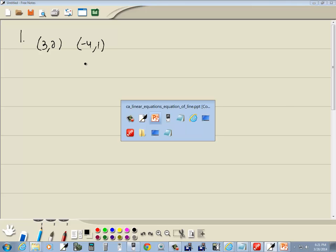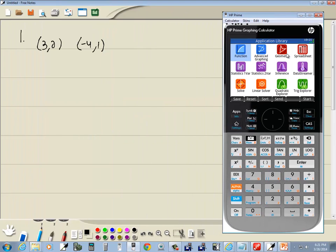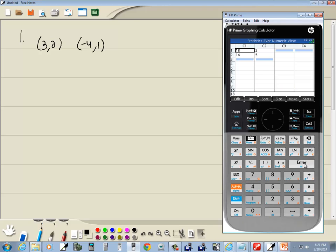Now, I want to find the equation of the line between these two points. I'm in my apps. If you're not, press your apps button and go to statistics 2-var, so down arrow and right arrow to it, press enter. We're going to put our x values in C1 and our y values in C2. So I got 3 enter, negative 4 enter. Now right arrow over here, up arrow, highlight that, and then 2 enter, and 1 enter.